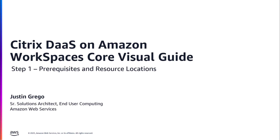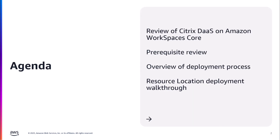This video will cover the first step in the process, with later videos covering the remaining steps. I'll start today by reviewing exactly what Citrix DAS on Amazon Workspaces Core is, cover a high-level review of the prerequisites, a brief overview of the entire deployment process, and then a demonstration of the first deployment step: defining a resource location and deploying two Citrix Cloud Connectors on EC2.